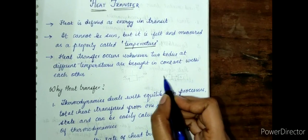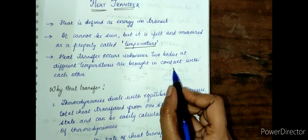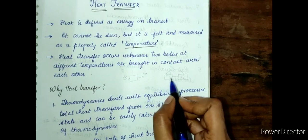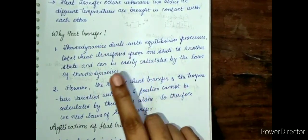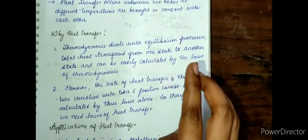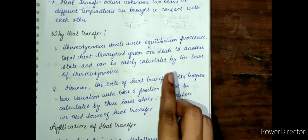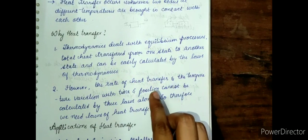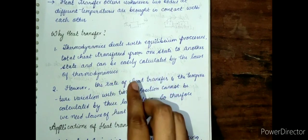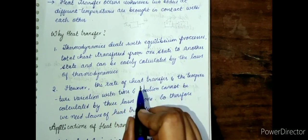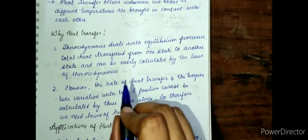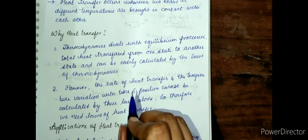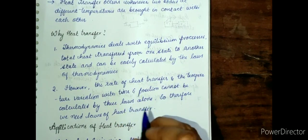Then there will be heat transfer from one body to another body. We also have the topic of thermodynamics — the interaction of heat and work. The first law of thermodynamics deals with energy balance, which leads to the concept of enthalpy. The second law of thermodynamics deals with availability balances, which leads to the concept of direction of flow — from higher temperature to lower temperature.